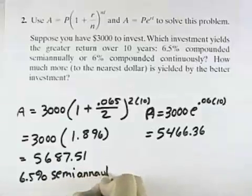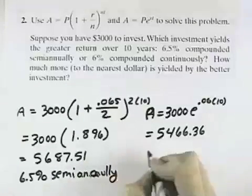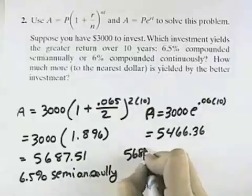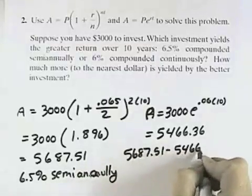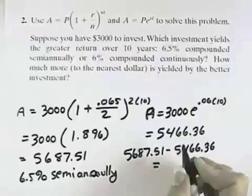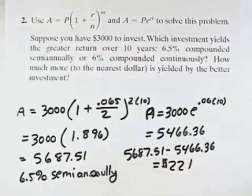And the other part of the question was, by how much? And so what I would have is $5,687.51 minus $5,466.36. When I round it off to the nearest dollar, that's a difference of approximately $221.